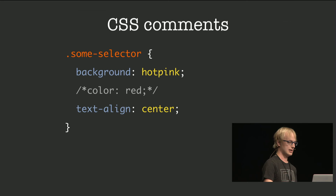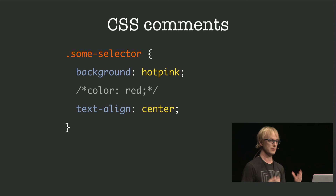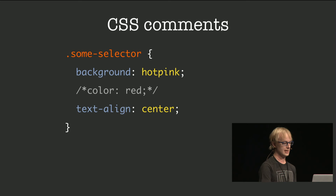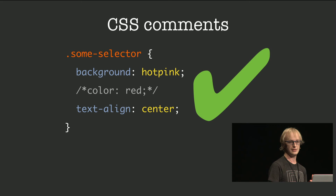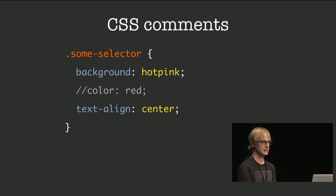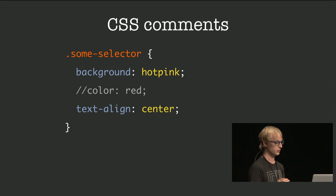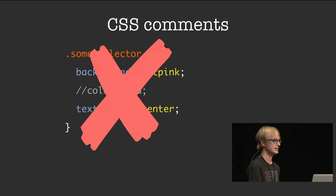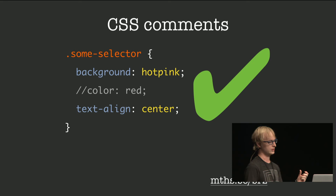Another thing I'd like to talk about is CSS comments. As you probably know, the only comment syntax CSS supports starts with a slash followed by an asterisk, and ends with an asterisk followed by a slash. Anything in between — including new lines — will be part of a comment and effectively ignored. That's why a color:red declaration placed inside a comment is ignored.